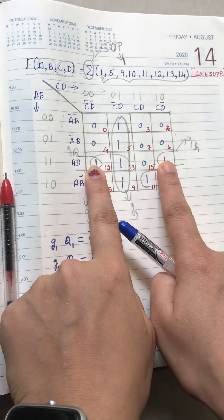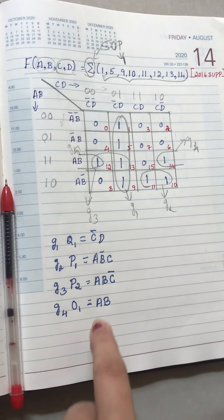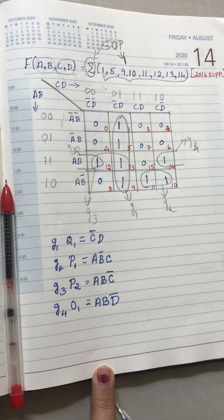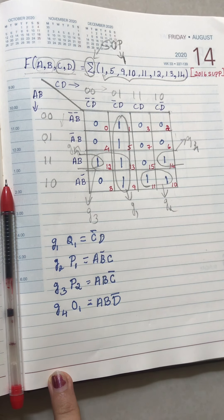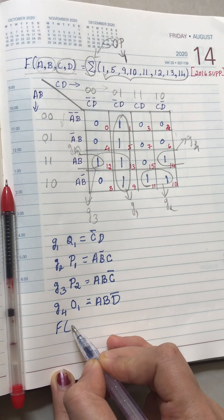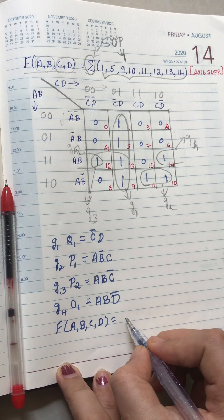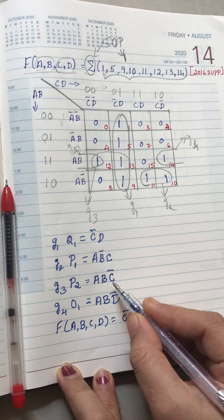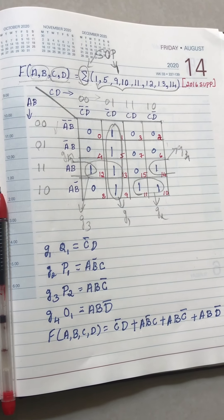For G4, the overlapping pair: the row common term is a b, and the column common term is d-bar, so G4 gives a b d-bar. Now writing the final expression: f(a, b, c, d) = c-bar d + a b-bar c + a b c-bar + a b d-bar. This is the final expression and the solution for this problem.